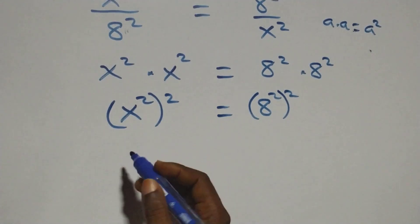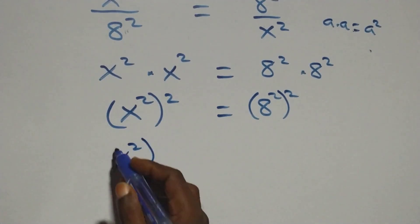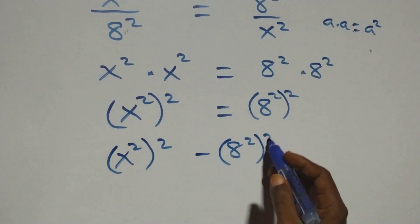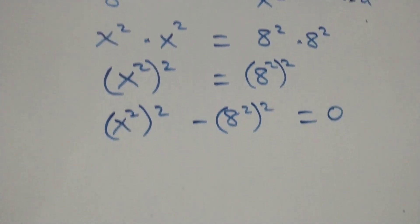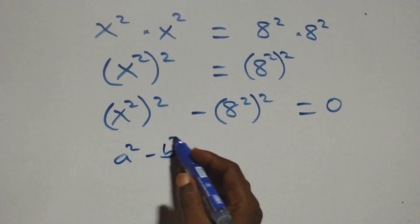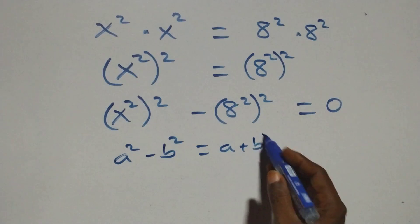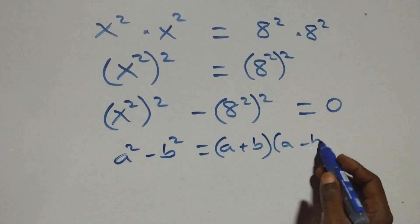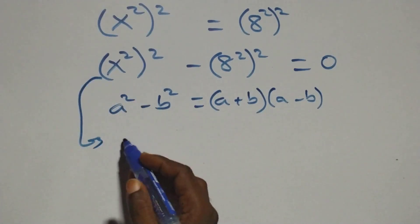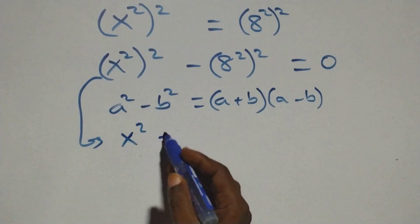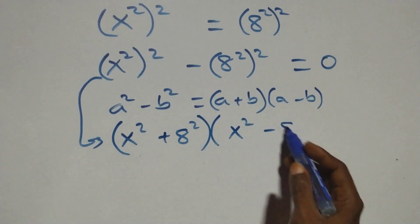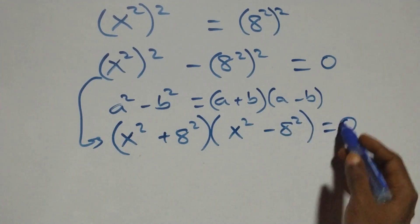Taking the right-hand side to the left-hand side, this becomes (x²)² minus (8²)² equals zero. This follows the difference of squares identity: a² minus b² equals (a + b)(a − b), so we get (x² + 8²)(x² − 8²) equals zero.